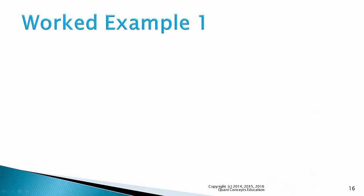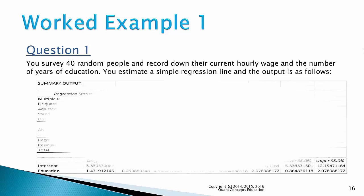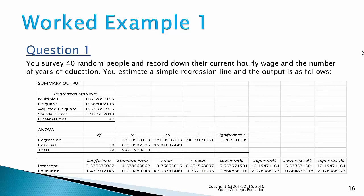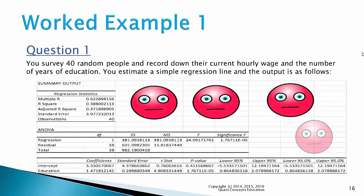The best way to learn regressions is through a worked example. Question 1: you survey 40 random people and record down the current hourly wage and the number of years of education. You estimate a simple regression line and the output is as follows. Don't freak out just yet — I know it looks complicated, but it's not as hard as it looks. We're going to break this down into little pieces as we work through this example.